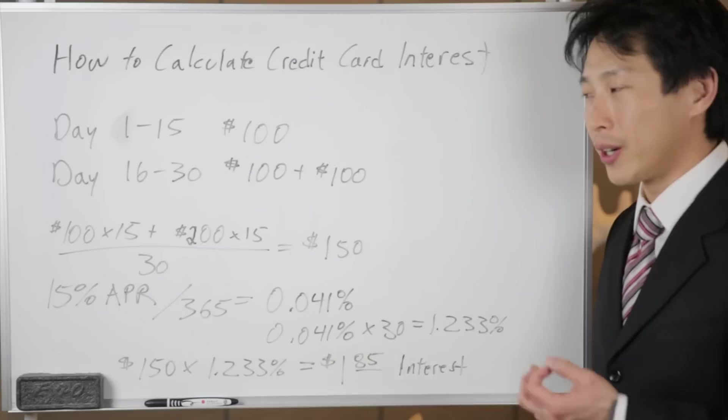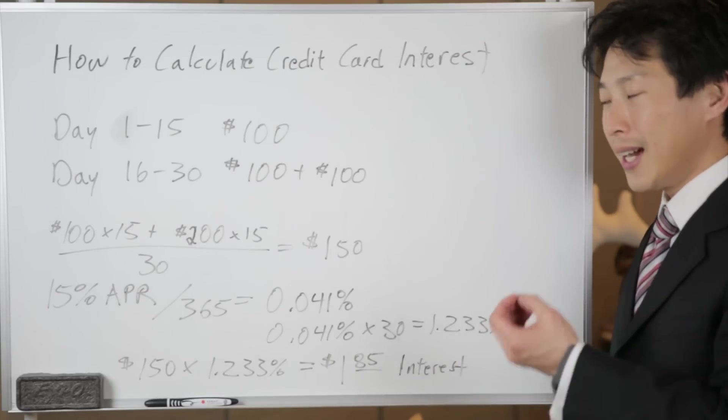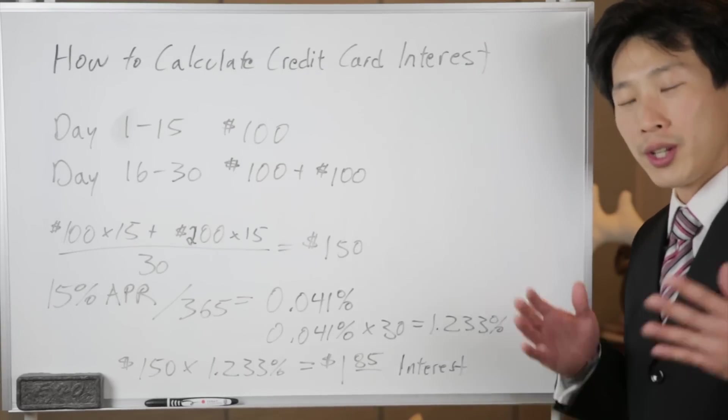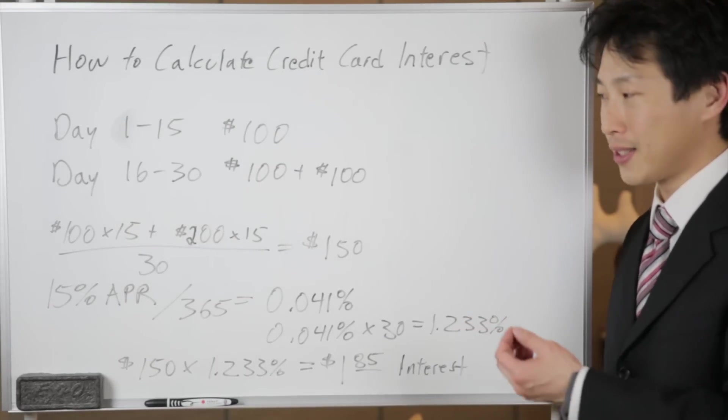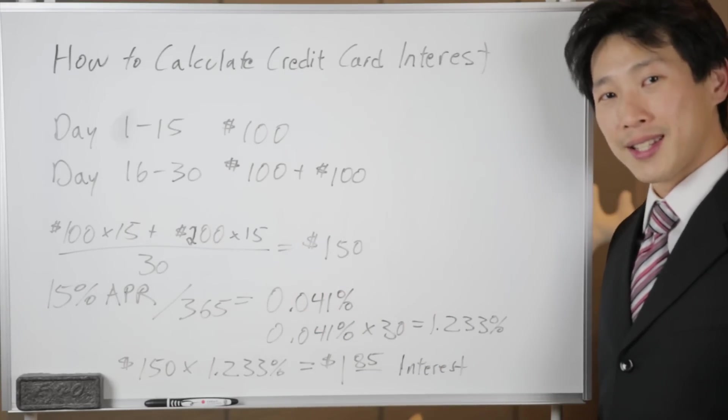When you see an APR on your credit card, it's actually something like 15%, 18%, 22%. That is an annual percentage rate. It's the effective rate at which you'll get charged in the whole year. But when you consider it on a per month basis, this is not exactly what you're gonna get charged. You're not gonna get charged 15% in a single month.